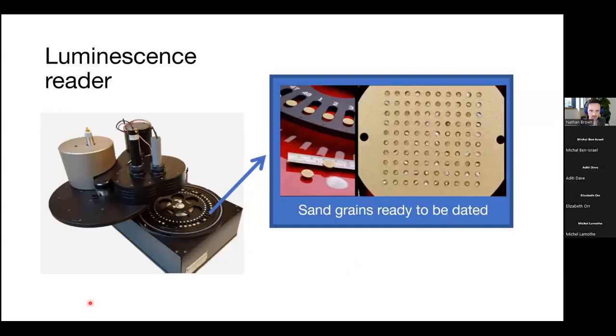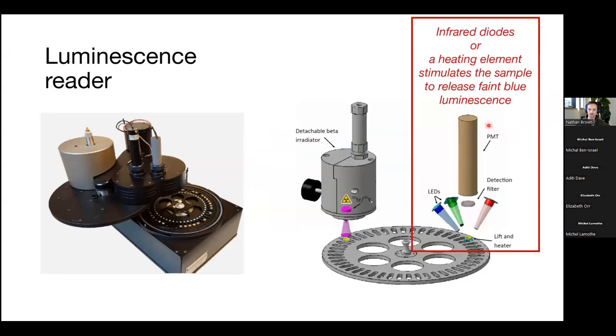How do you make these measurements? So here is the standard instrumentation that we use. You can see, in this case, we're doing a single grain measurement. You can see all these grains mounted on this specialized holder. Within the instrument, there are stimulation diodes and a photomultiplier tube.